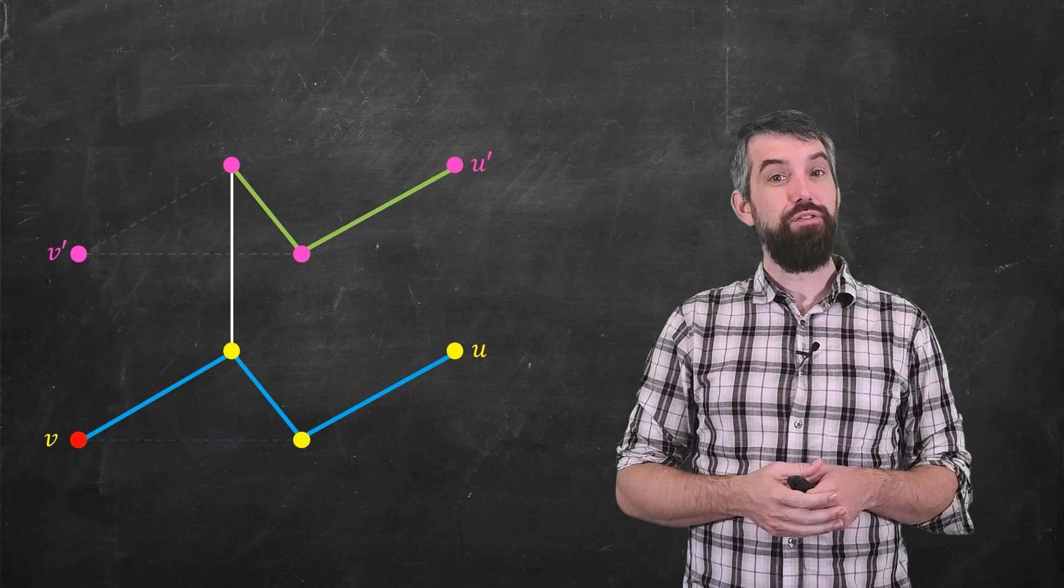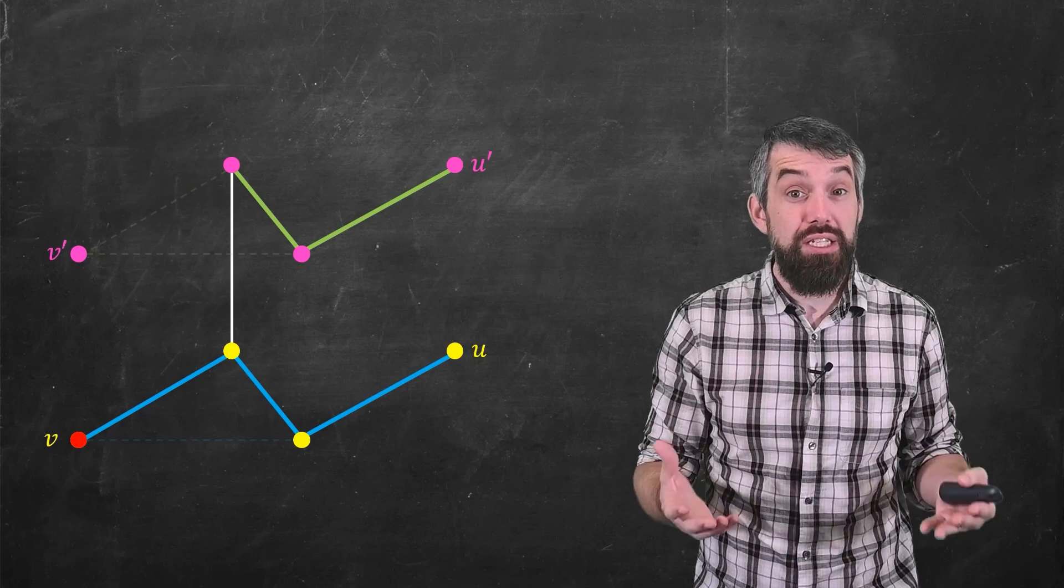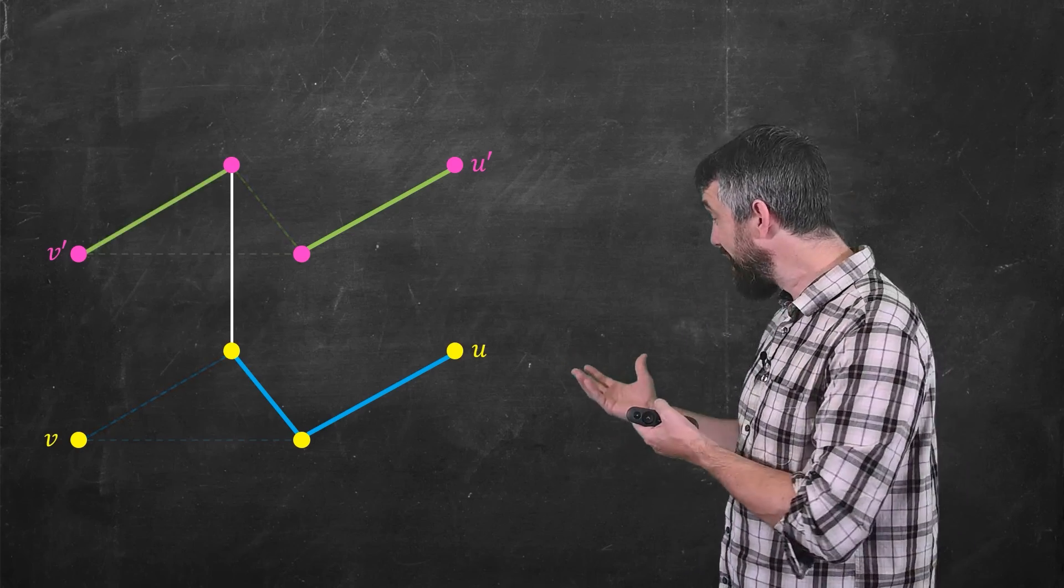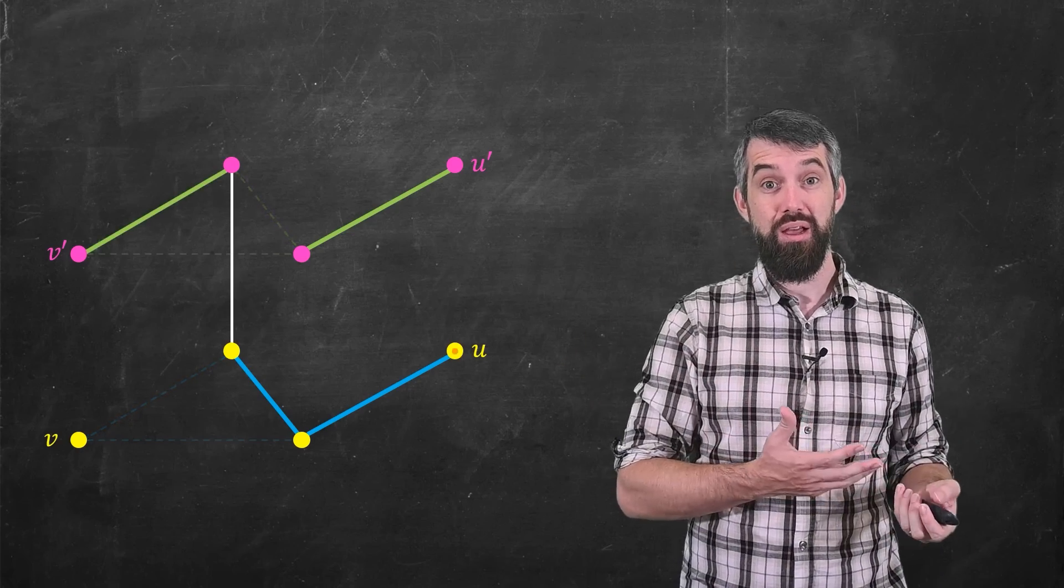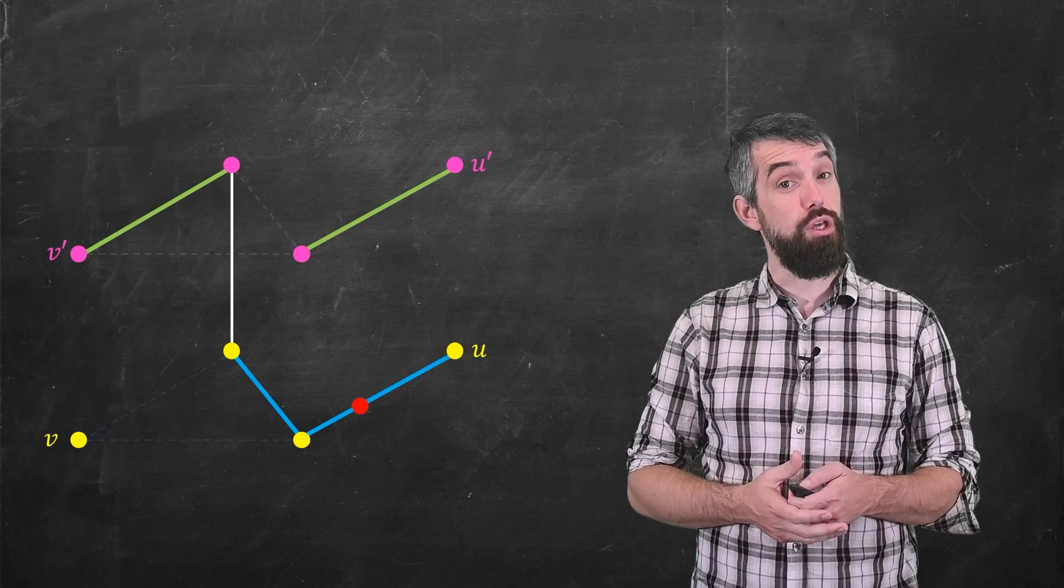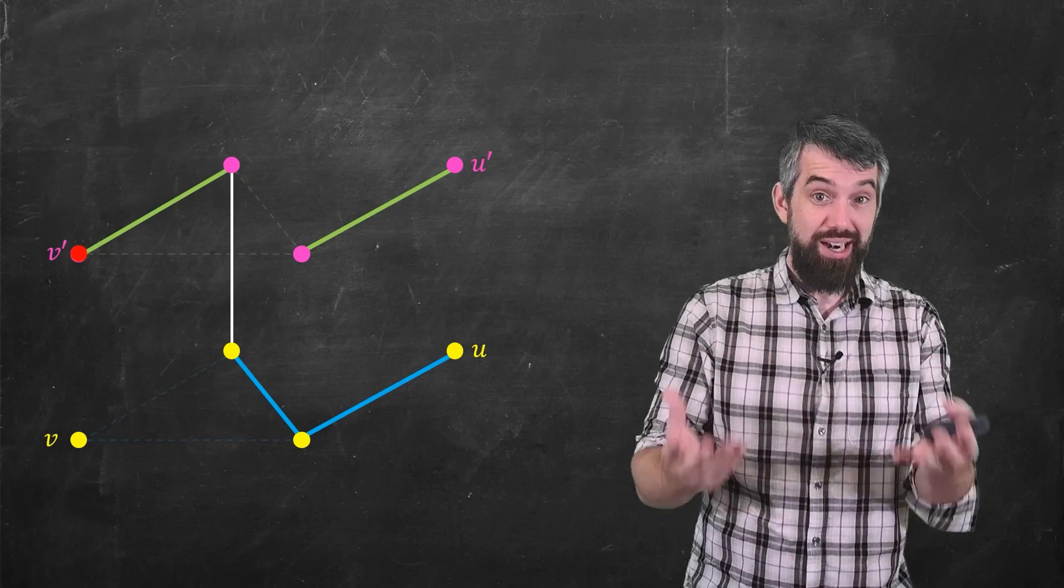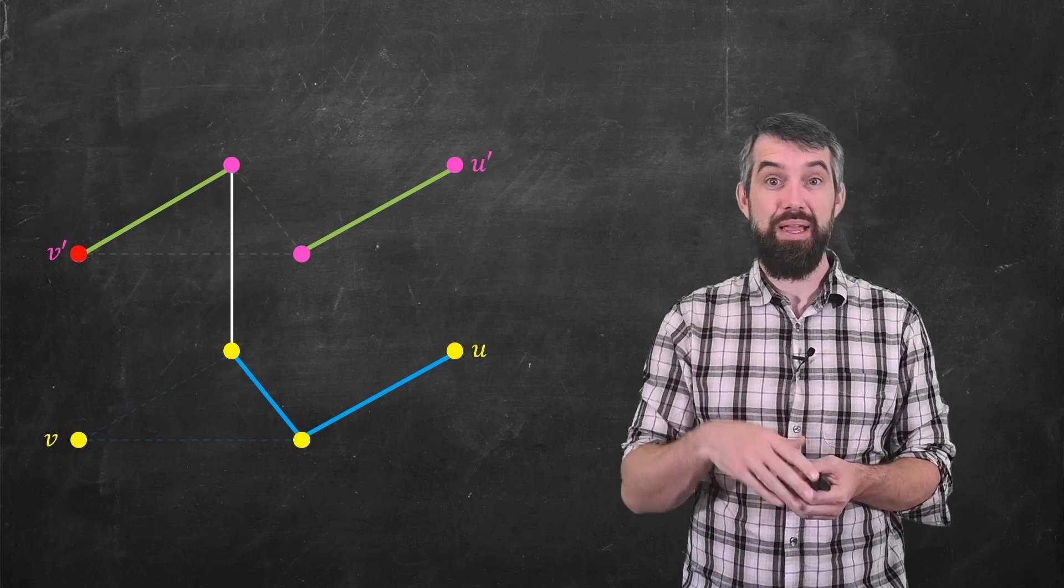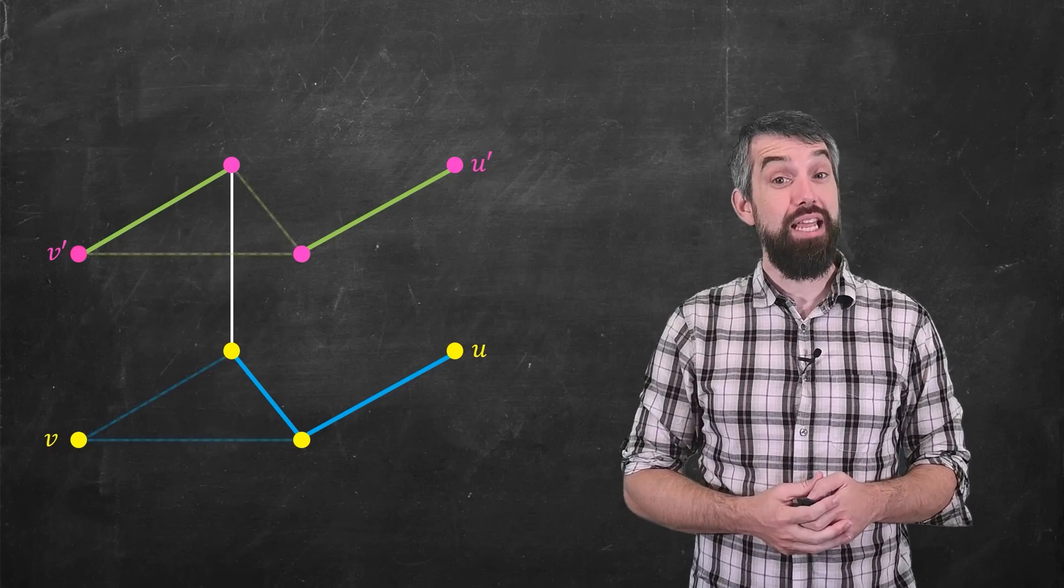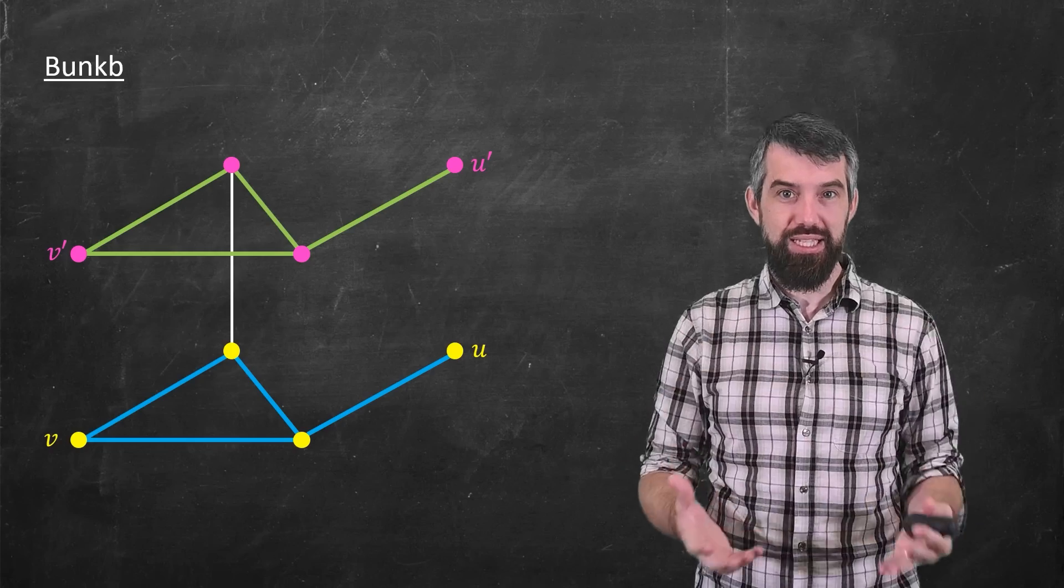If I did this maybe a different way, maybe it was some other sets of edges that faded away, now I can't get from U to V, but I can get from U to V'. So if I start at U, sometimes I can get to V, sometimes I can get to V'. So now I can finally state what the bunk bed conjecture is precisely.